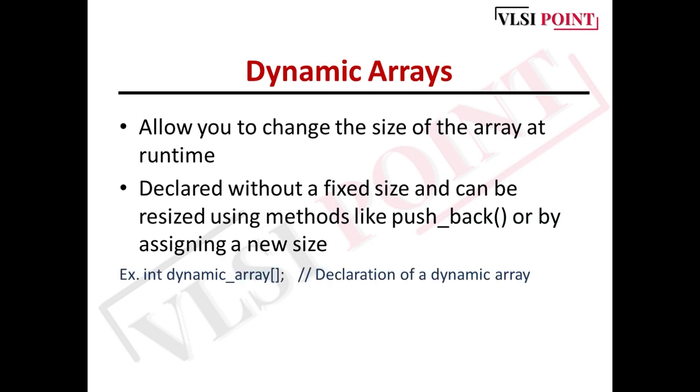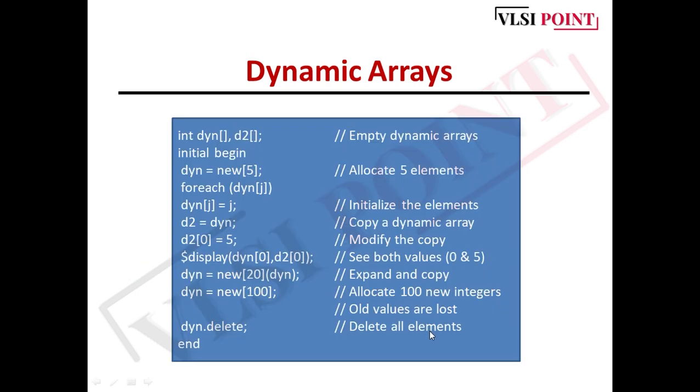Here we have an example of how you can declare a dynamic array. int, the data type, then the name of the array and then the square bracket. Here you need not define the size. Let's see some more examples. We have int dynamic array dyn[] and d2[]. We have taken two empty dynamic arrays here. Then in initial begin dyn = new[5]. Here we are allocating 5 elements to this dynamic array dyn. Now foreach (dyn[j]) dyn[j] = j. That means dyn[0] = 0, dyn[1] = 1, dyn[2] = 2 till dyn[4] = 4. Total 5 new elements.